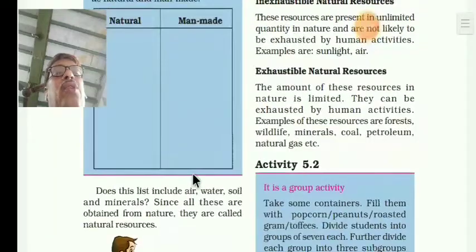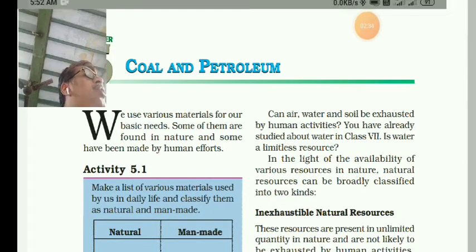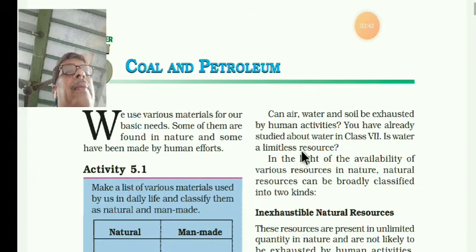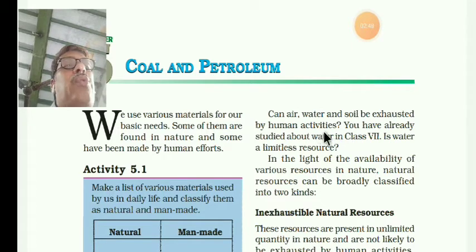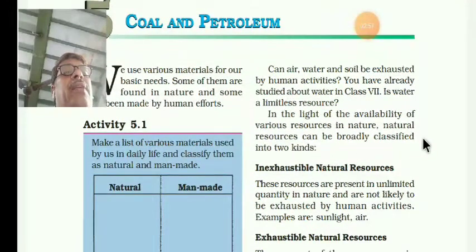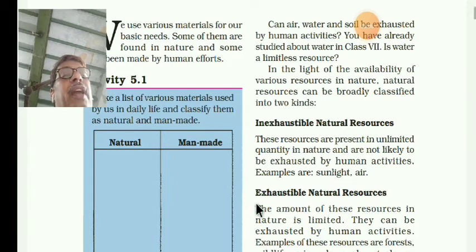Now these natural resources are classified. Can air, water, and soil be exhausted? Exhausted means after using them they will be over. The resources are broadly classified into two kinds: non-renewable resources and renewable resources.